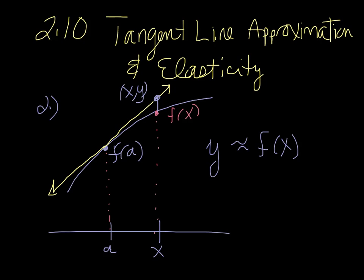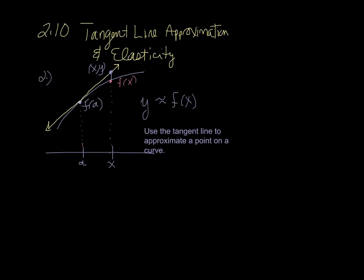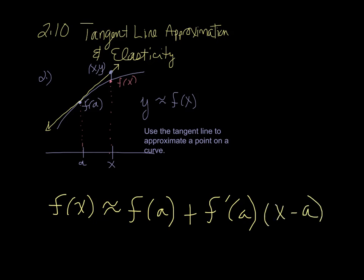So what we're doing is we're going to use the tangent line to approximate a point on a curve. And we get a formula for this. That formula is f(x) is approximately the value of f(a) plus the derivative of f(a) times x minus a.